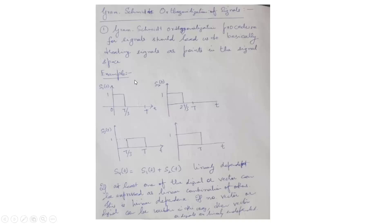I will do it with an example. Let us consider a signal s1(t) whose value is 1 from 0 to T/3, where T is the time period and the x-axis is time. The second signal s2(t) is 1 from 0 to 2T/3. The third signal s3(t) is 1 from T/3 to T, and the fourth signal s4(t) is 1 throughout from 0 to T.